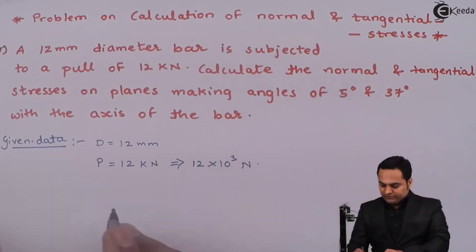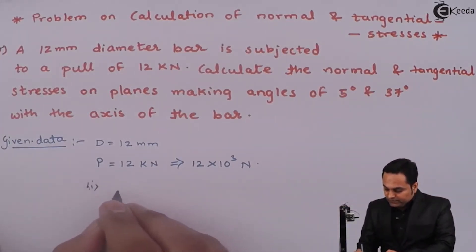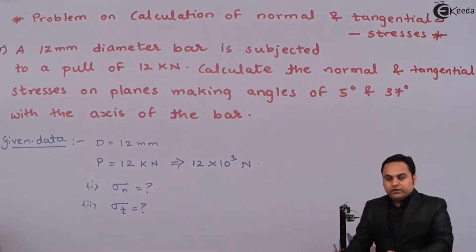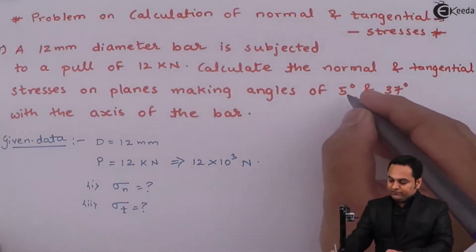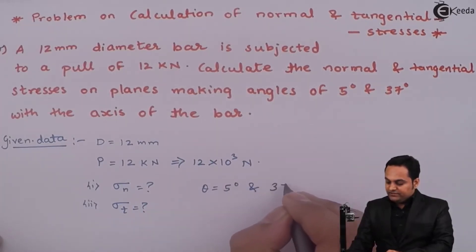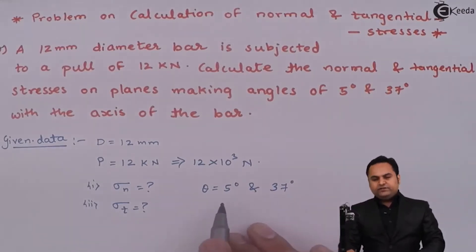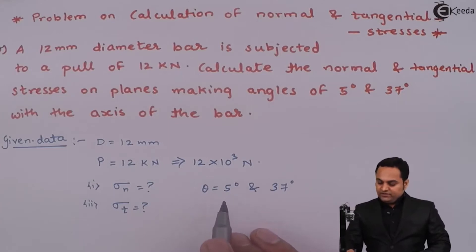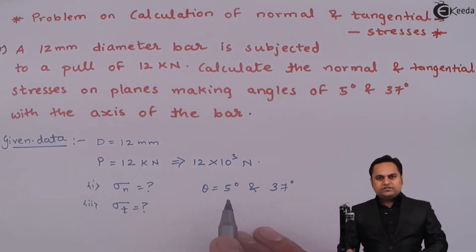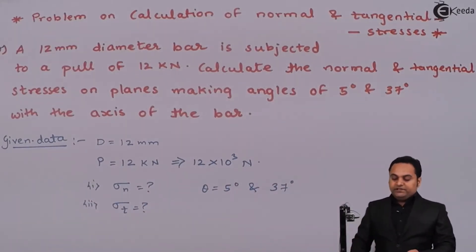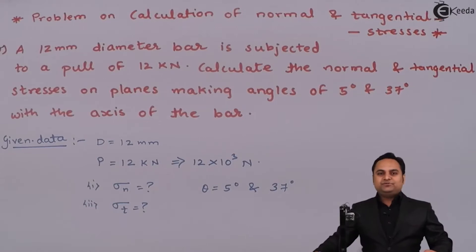The question is to calculate normal stress, denoted by sigma suffix n, and tangential stress, denoted by sigma suffix t. The values of theta are given as 5 degree and 37 degree — these are two different cases where we take the first angle as 5 degree and the second as 37 degree with the axis of the bar. Now with the data available let us get the solution.